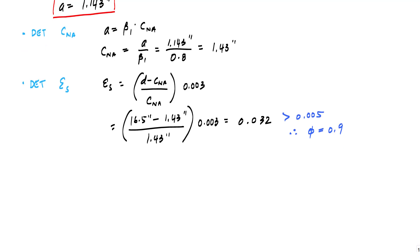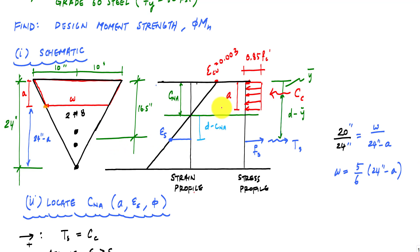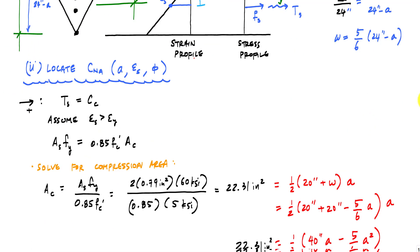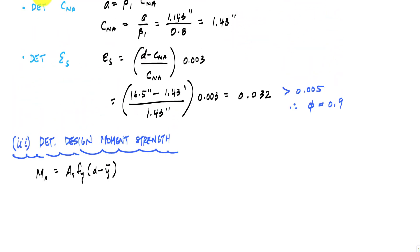And now what I want to do is determine the design moment strength. And that comes from moment equilibrium of my stress profile. And the nominal moment that we're looking to solve for here would actually be acting like this. And when I apply moment equilibrium, we'll get this rather famous or popular for reinforced concrete equation, this AS FY times D minus Y bar. In fact, because the strain in the steel is 0.032, we've also verified the assumption that the steel has yielded. It is greater than epsilon Y for grade 60 steel, which is 0.00207. And this steel has yielded. So our assumption is valid.